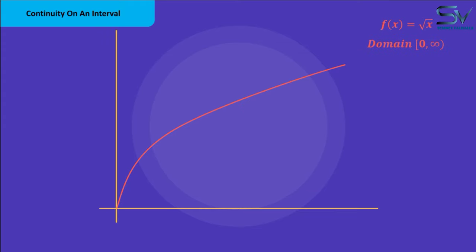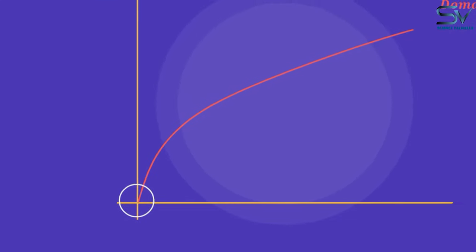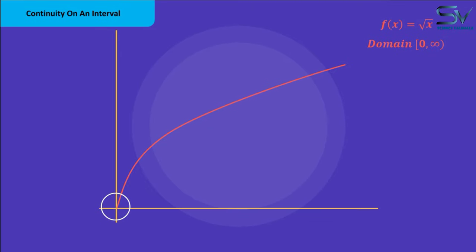We have the function, the square root of x. First, we begin with x equals 0, which is the left endpoint. The value of the function is 0 at x equals 0. And the right limit is 0. This function is thus right continuous on the left endpoint.